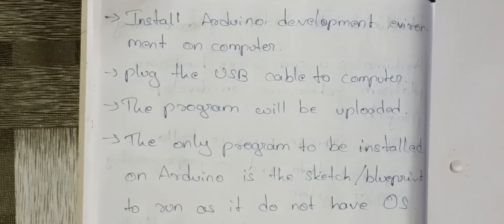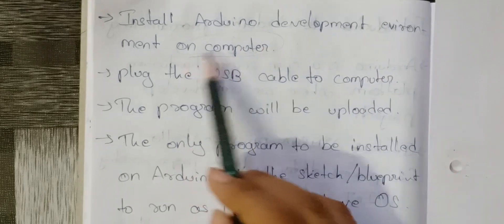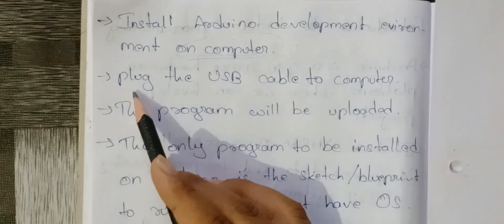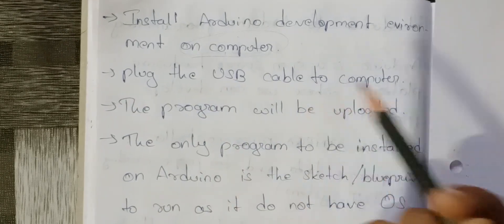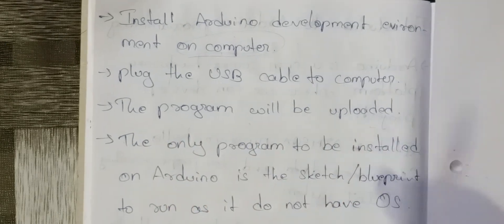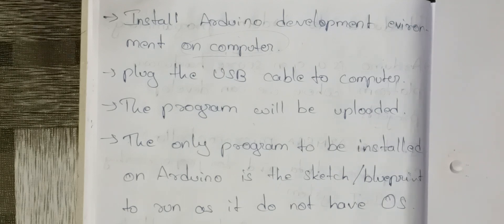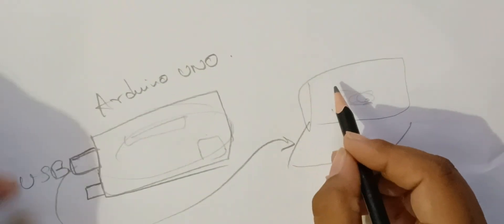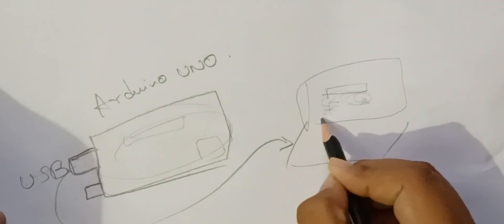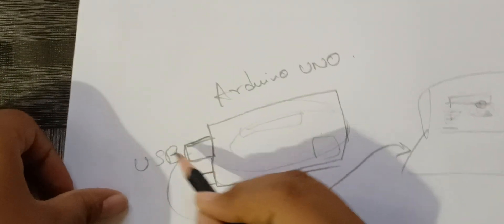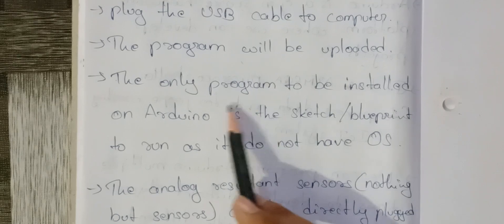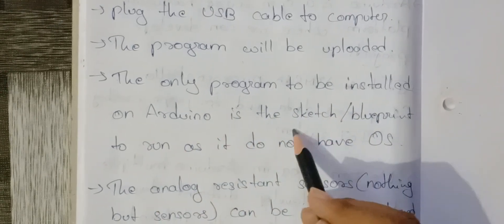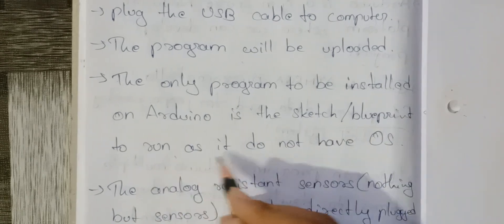We install the Arduino IDE on our computer. There are installation steps: plug the USB cable into the computer, and then the program will be uploaded using the IDE. When applying the program, there is an Upload button to upload it. The only program to be installed on Arduino is the sketch or blueprint, since Arduino does not have an operating system.